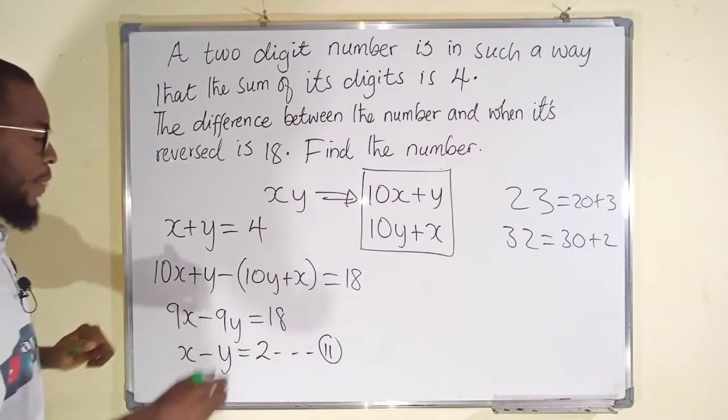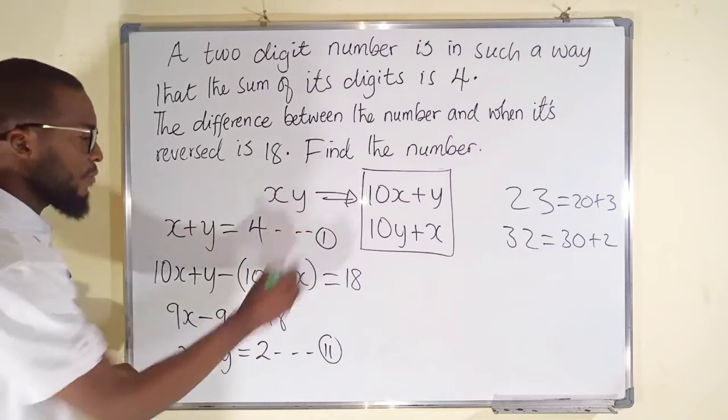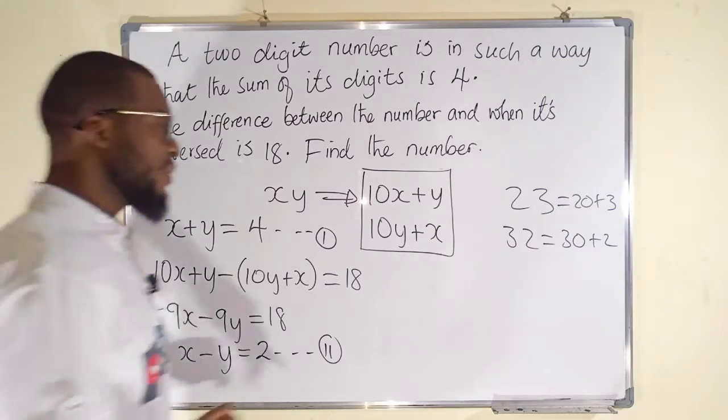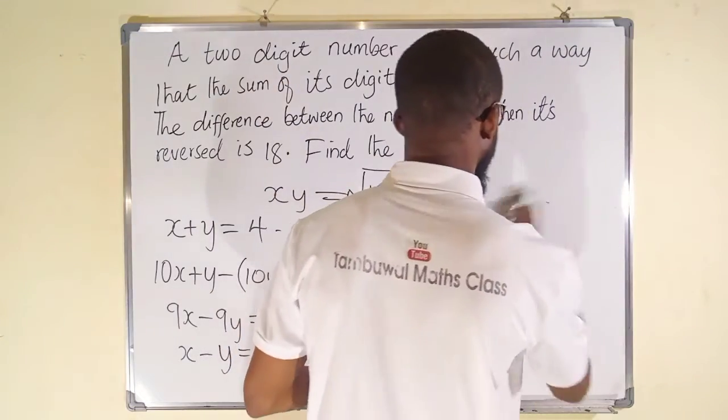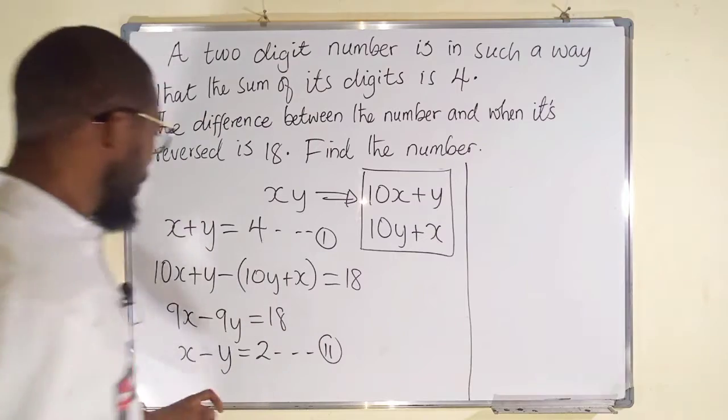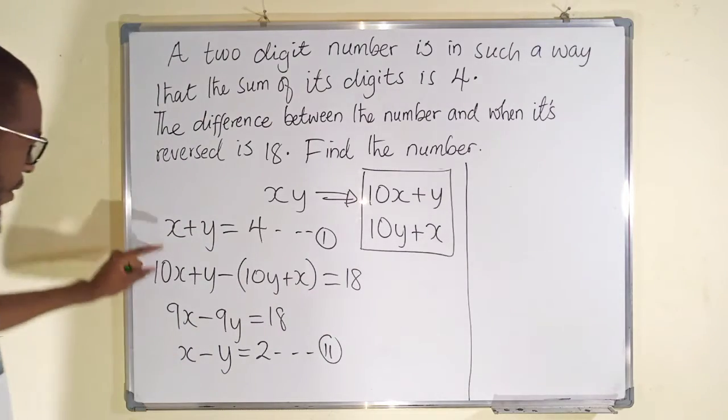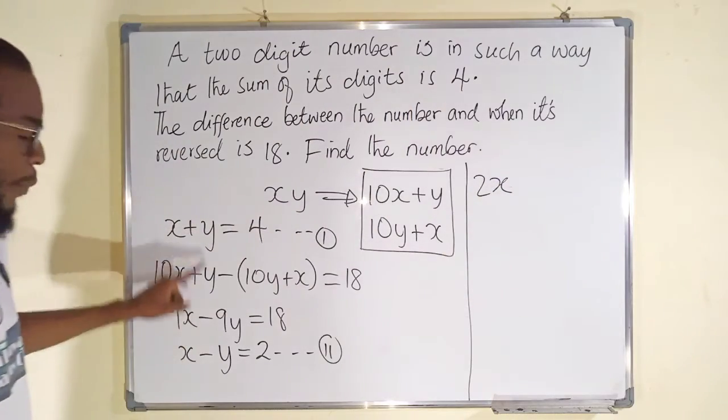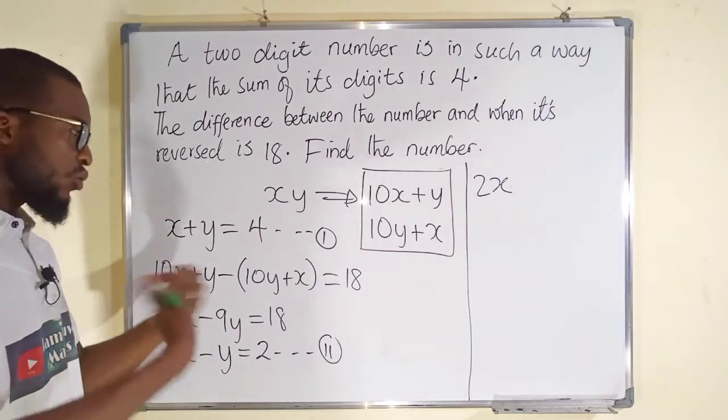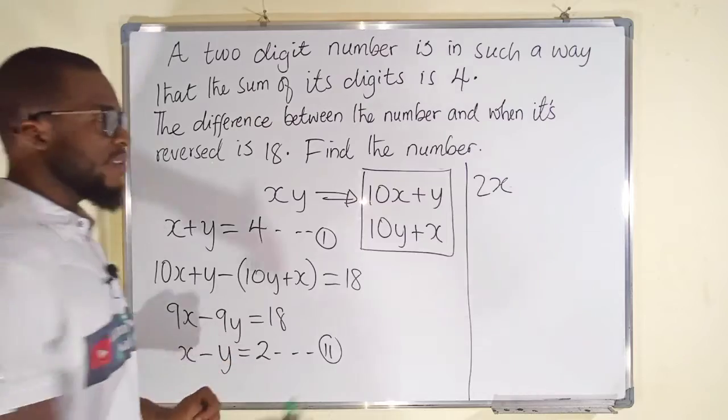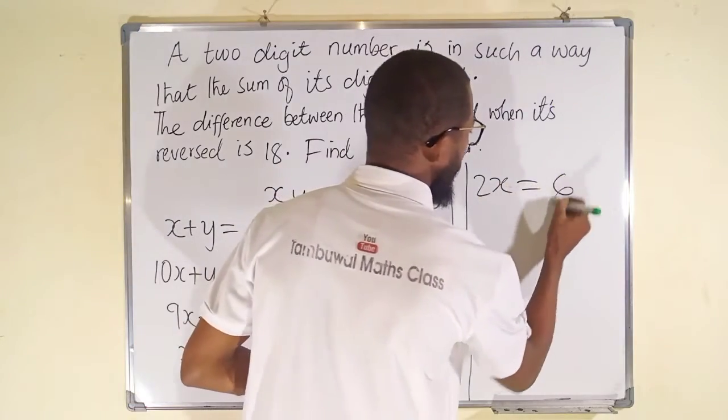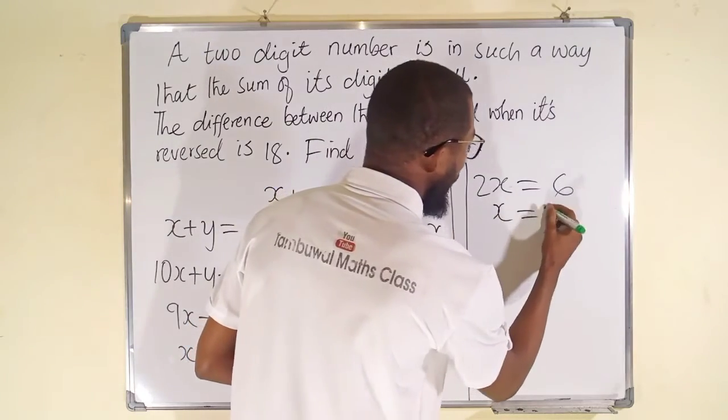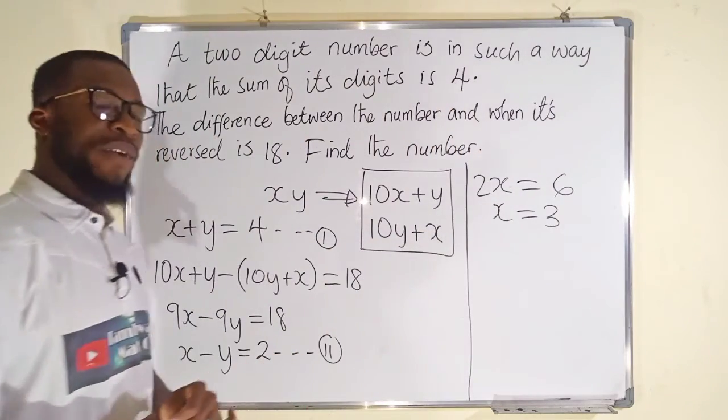Now we can solve equation 1 and equation 2 simultaneously. Let me do it here. Let us add the two equations together. X plus X is 2X, Y plus negative Y is 0, so we go to the right-hand side: 4 plus 2 is 6. And if you divide both sides by 2, you have X to be equal to 3. The value of X is 3.